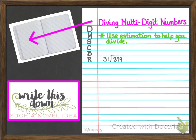We're going to begin with your next available set of pages. You're going to write what you see here on this screen on the left side of your composition notebook. Go ahead and pause your video at this time and copy what you see, and then when you're ready to go, push play and we'll work through the example.